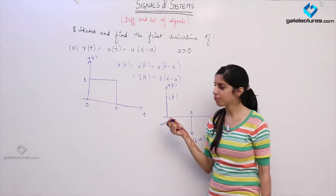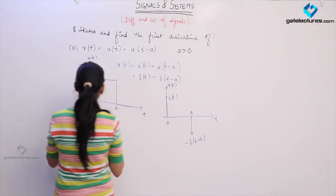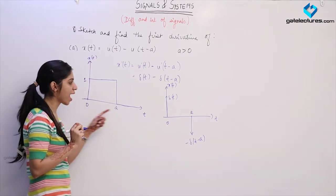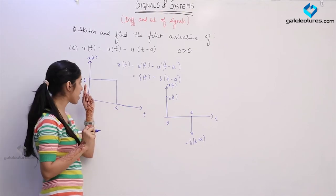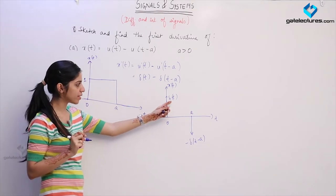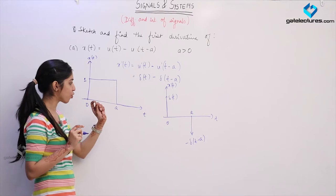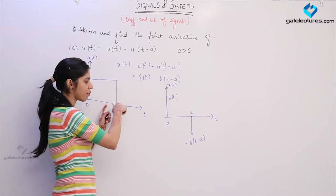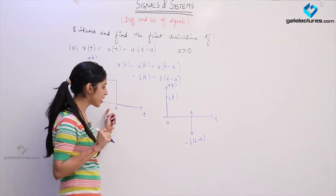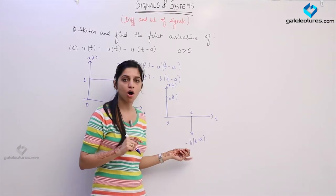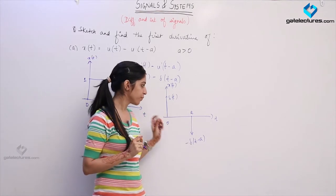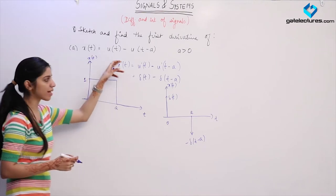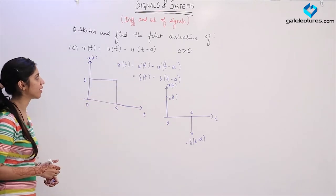From the graph itself you can see directly there was a discontinuity at t equal to 0. The size of discontinuity was 1, so we had an impulse of area 1 at t equal to 0. The next discontinuity occurred at t equal to a, of size minus 1 — the value change was minus 1. So next we had an impulse at t equal to a of area minus 1. This is how you can obtain this derivative graphically and mathematically.